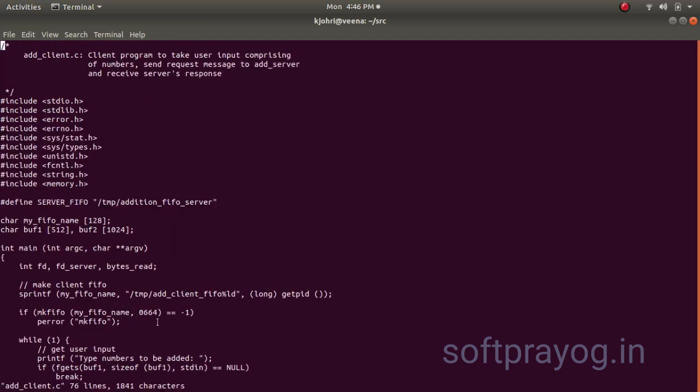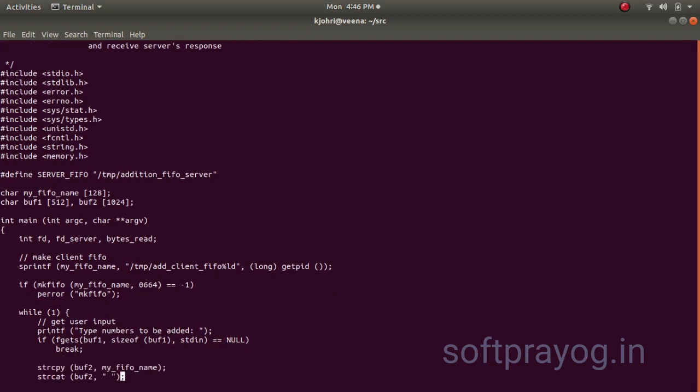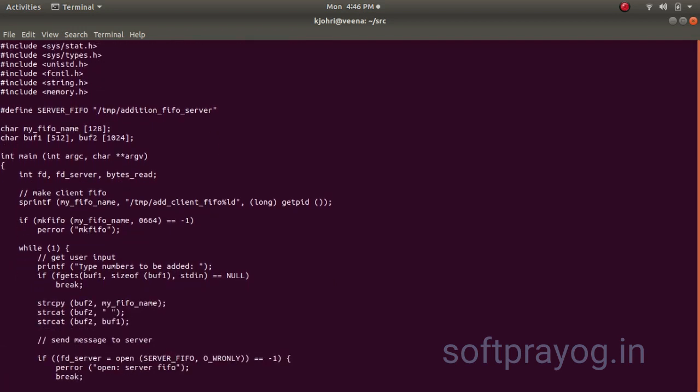Now let us look at the client code. This is the server FIFO address, FIFO server FIFO name. So client knows it and then client has a FIFO. The client's FIFO name is /tmp/add_client_FIFO followed by the PID process ID of the client. So it makes the FIFO for itself. Then it asks the user to type in all the numbers that you want to be added.